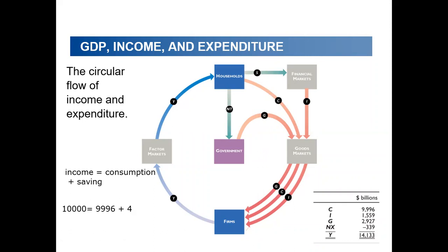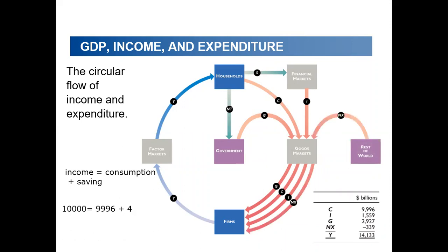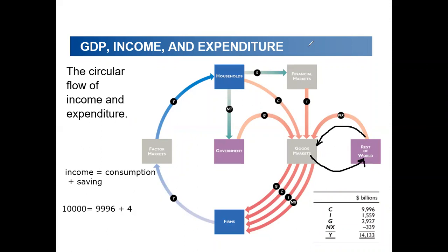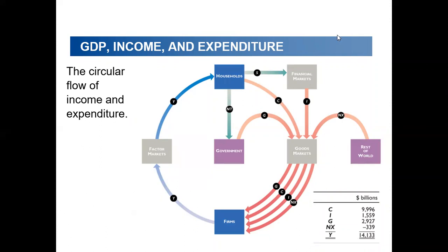In an open economy, there are exports and imports. When I export a product, it provides inflow of money. When I import, money flows outside the country. By this, we identify the four parts of GDP from the income and expenditure approach.